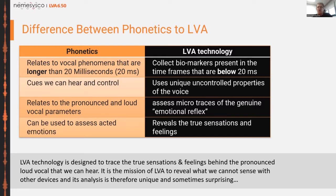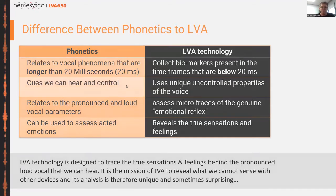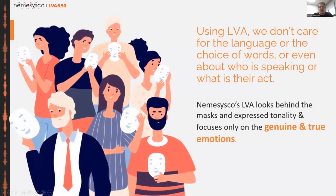Nobody in an investigation room sits and says, 'Oh no, I never lied to anyone.' It doesn't work that way — only in movies or cartoons. So we had to develop this much deeper technology compared to phonetics. To sum up: LVA doesn't care about your language, choice of words, who is speaking, or how they act. All we care about using LVA is how people try to suppress their emotions and how to get the genuine, true emotions.